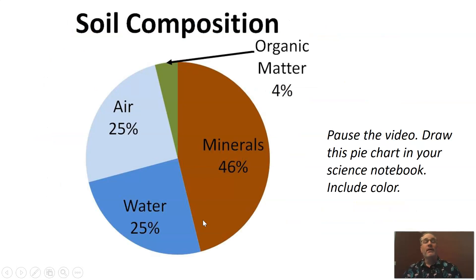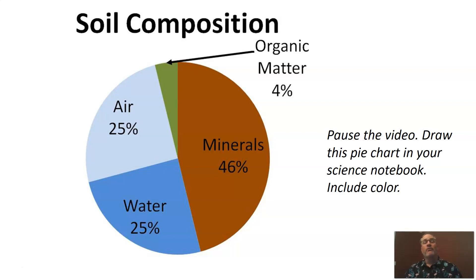I keep coming back to this pie chart, and I want to look at it again today. Our first video talked about weathering and parent rock and how rock is turned into smaller and smaller bits by weathering, becoming the minerals we find in soil. Last week we looked at the smaller percentage, which is organic matter. And we're going to, in an indirect way, be looking at that 50% that's left. In all healthy soil, we're going to find air and water — and quite a bit of it.